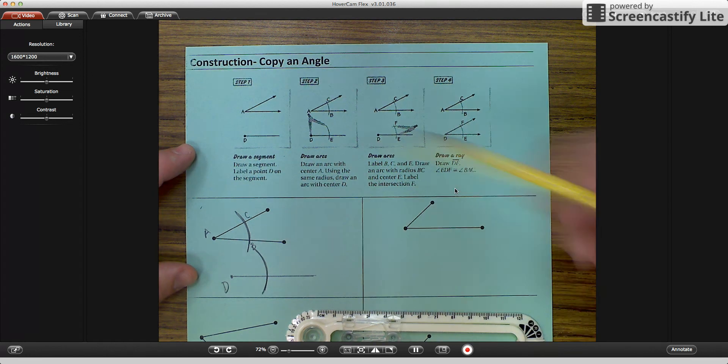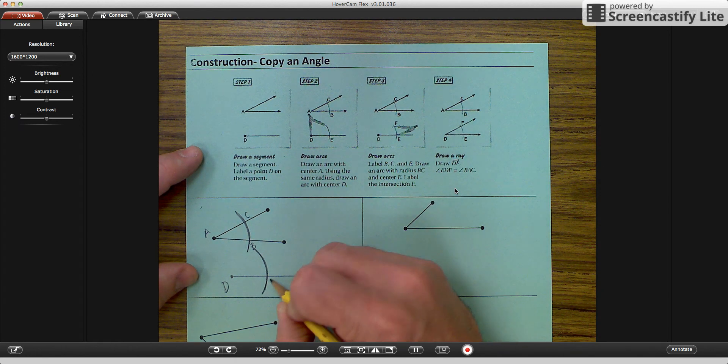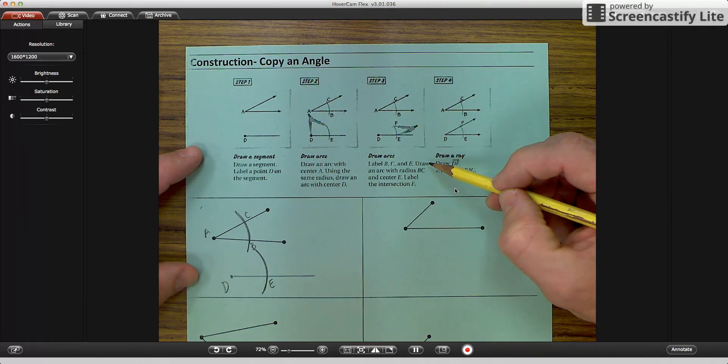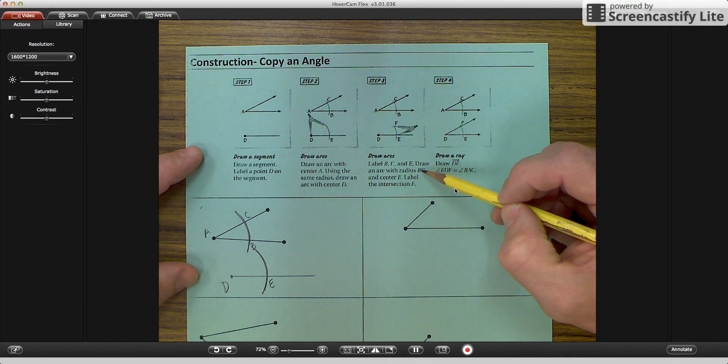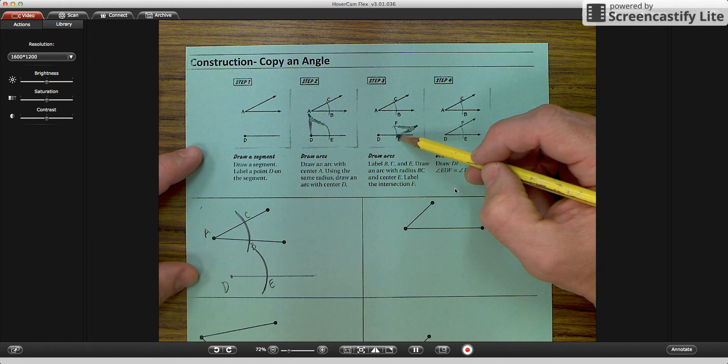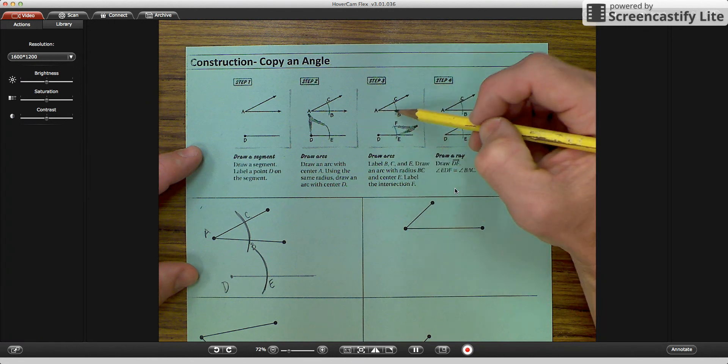We already labeled B and we labeled C. Now we're going to label E, and we're going to draw an arc with a radius BC. So what we need to do is we need to measure BC.